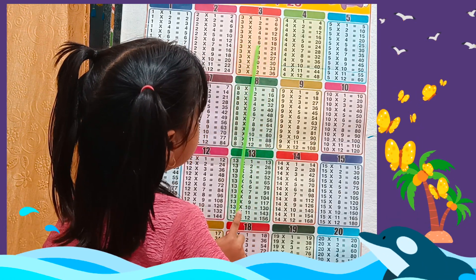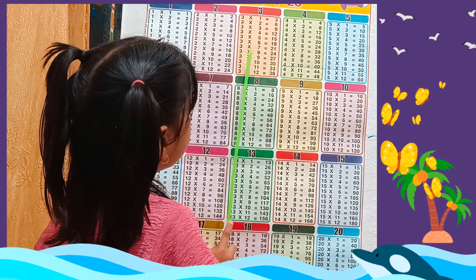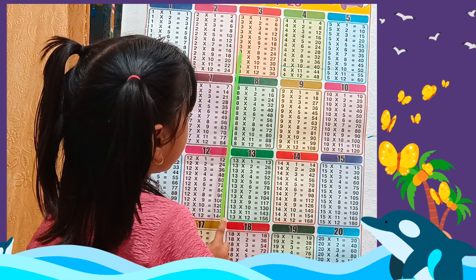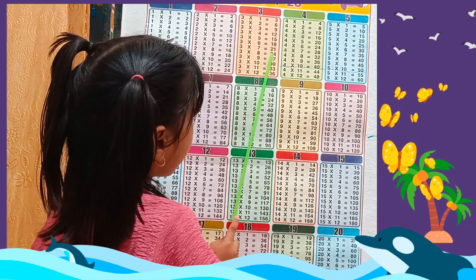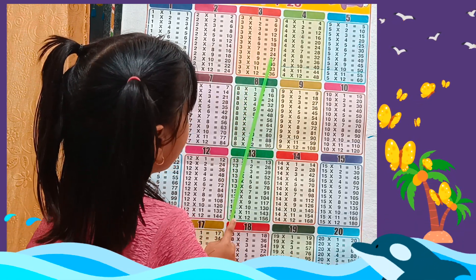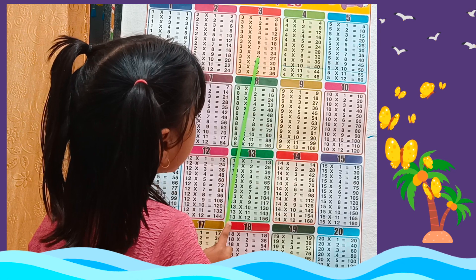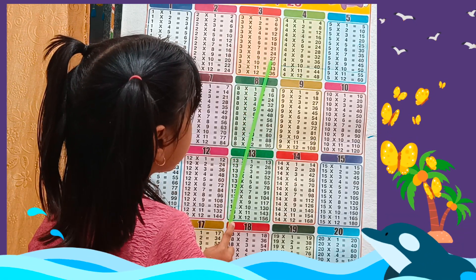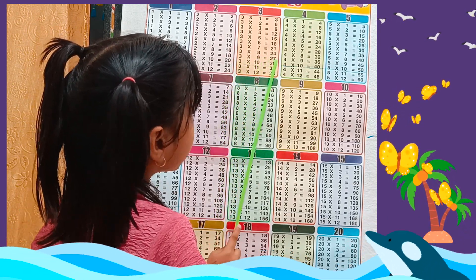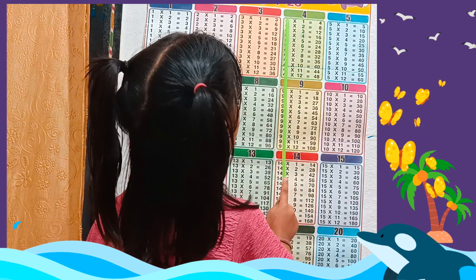3 7s are 21, 3 8s are 24, 3 9s are 27, 3 10s are 30, 4 1s are 4.